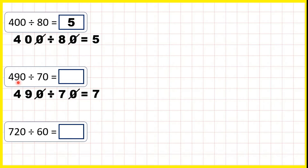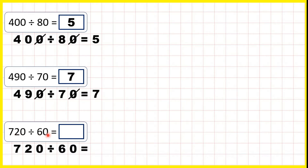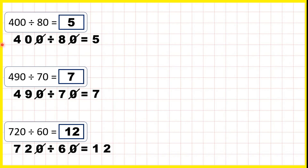So 490 divided by 70 is 7. And 720 divided by 60 — we can cancel the zeros, so then we just have 72 divided by 6, which is 12.